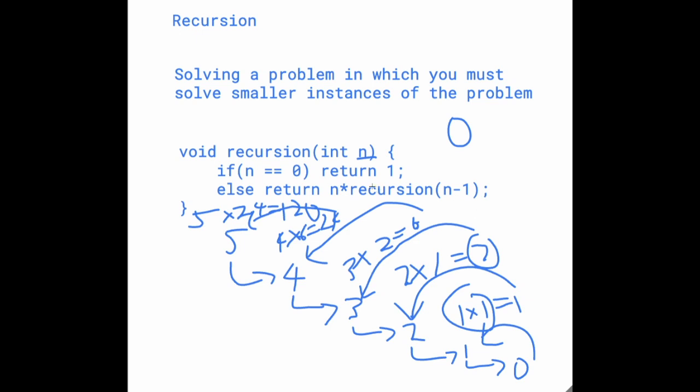So if we look at this return statement, we have n and the recursion of n minus 1. And the recursion of n minus 1 will basically be the factorial of n minus 1. So 5 factorial is equal to 5 times 4 factorial. And 4 factorial is equal to 4 times 3 factorial. And so you can basically think of it as this.